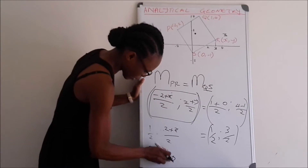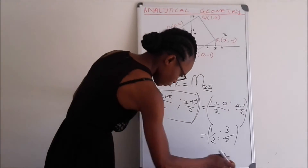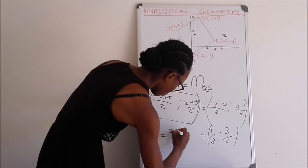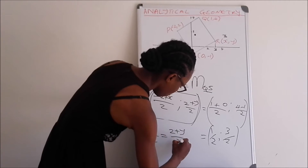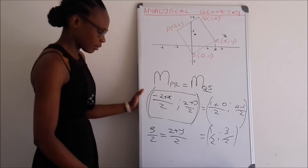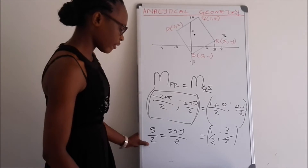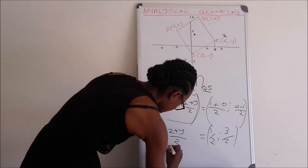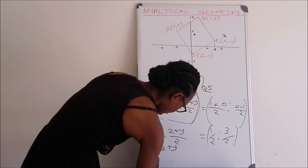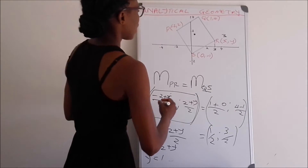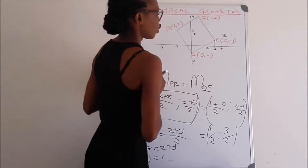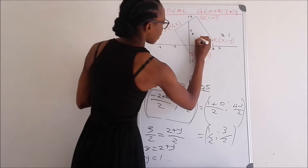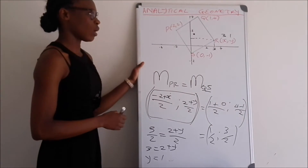Finding the y-coordinate: we equate 3/2 = (2 + y)/2. Multiplying both sides by 2 gives 3 = 2 + y, so y = 1. The y-coordinate of point R is equals to 1, which also makes sense when we plot it back on the graph.